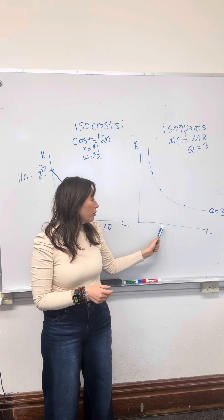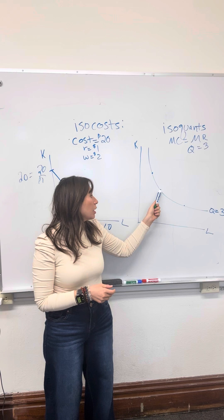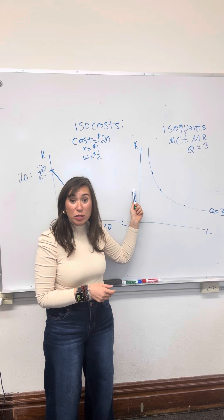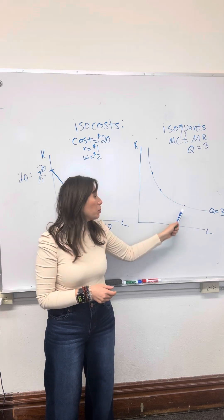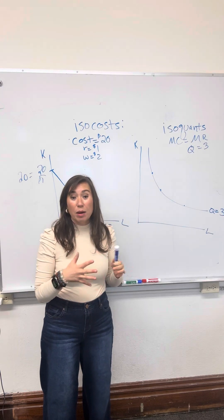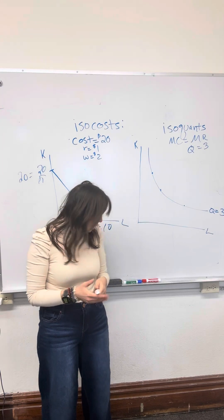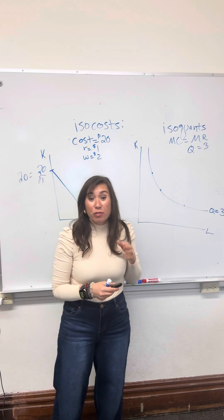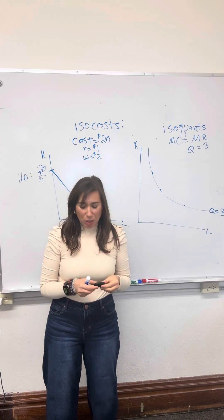On the isoquant, we map out those combinations. For example, maybe three units of labor and five units of capital, or ten units of labor and two units of capital, or any combination thereof. In our next video, we're going to put the isocost and isoquant together to find the actual cost-minimizing, profit-maximizing solution.